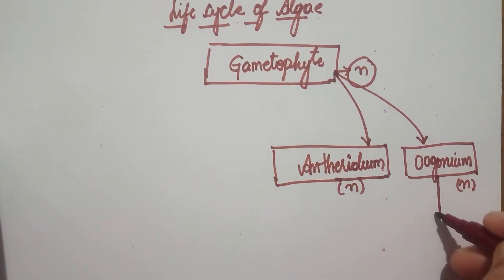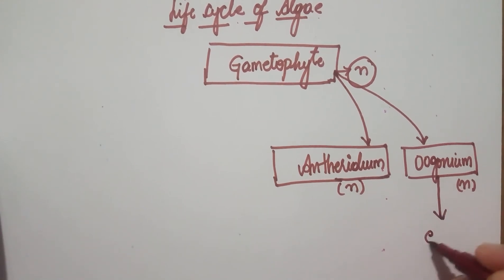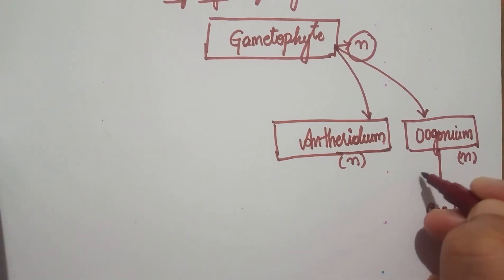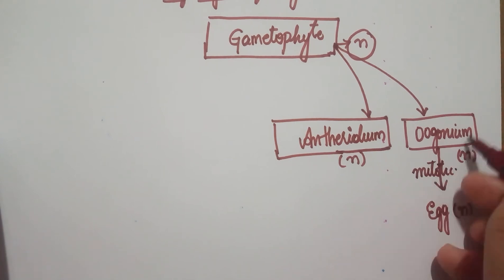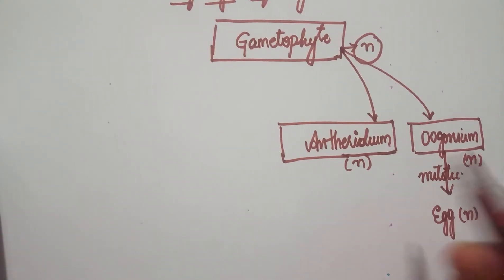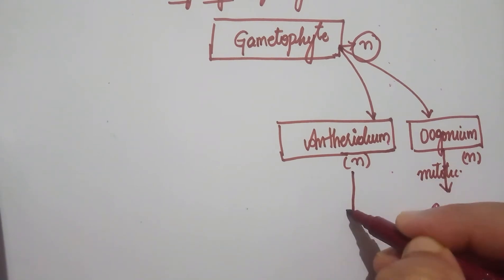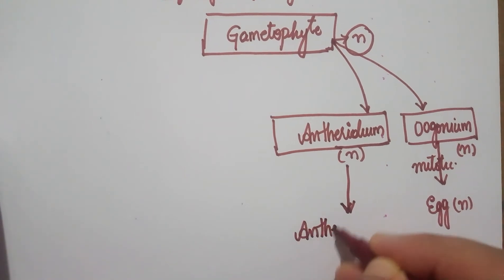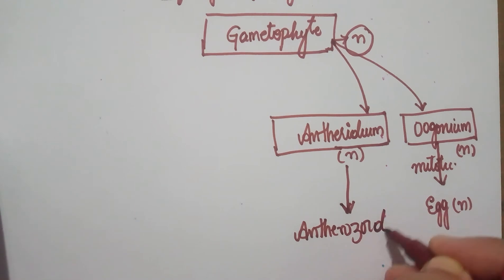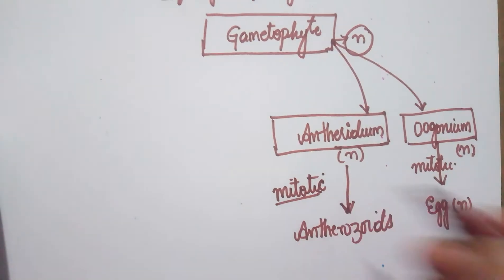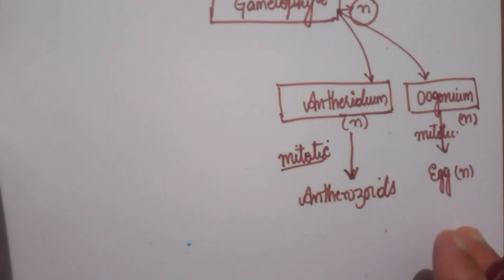The oogonium is going to produce the egg, because it is the female structure. The division happening here is mitotic division, not meiosis, because the oogonium is already haploid, so a meiotic division cannot happen. Similarly, to produce the antherozoids, the division taking place in the antheridium is also mitotic — an equational division.